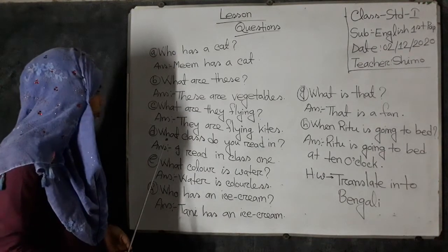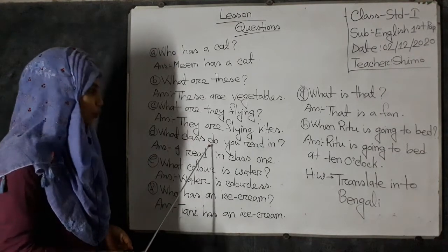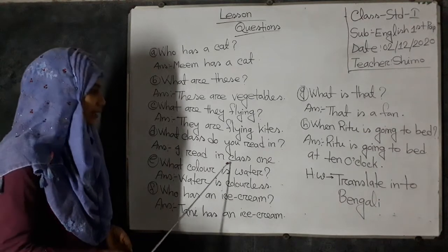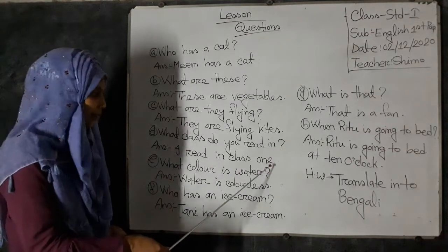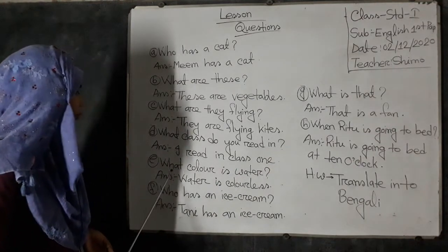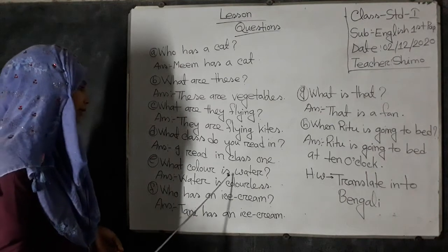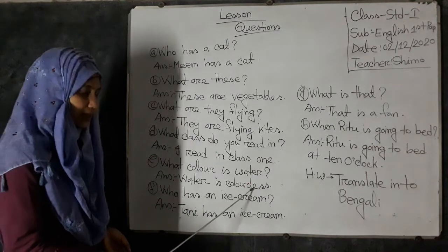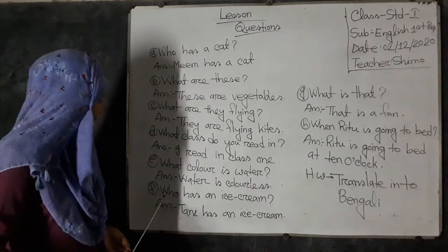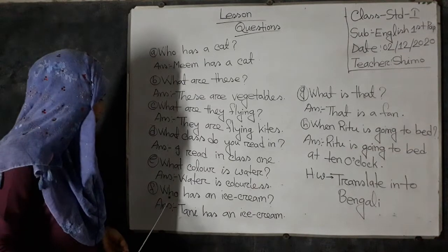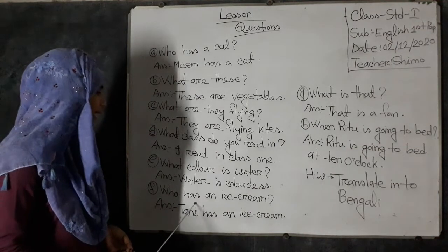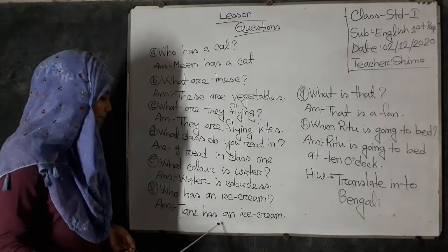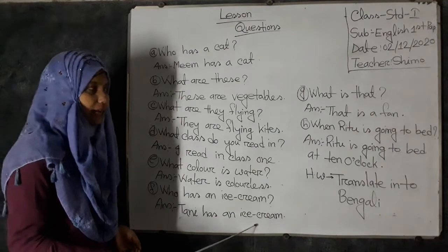D. What class do you read in? I read in class 1. E. What color is water? Water is colorless. F. Who has an ice cream? Tani has an ice cream.